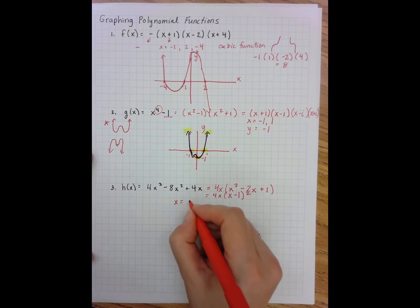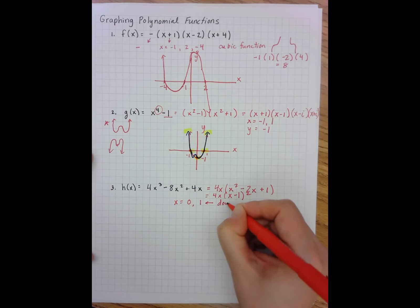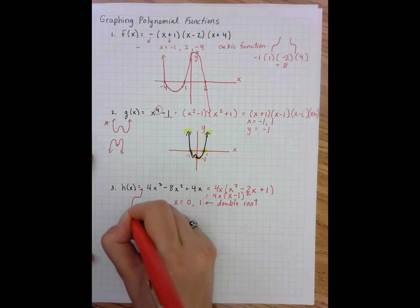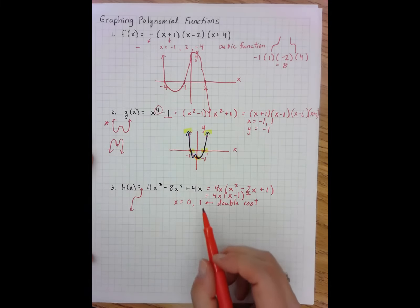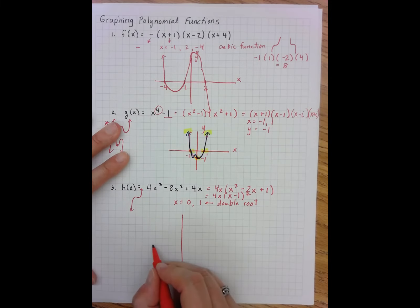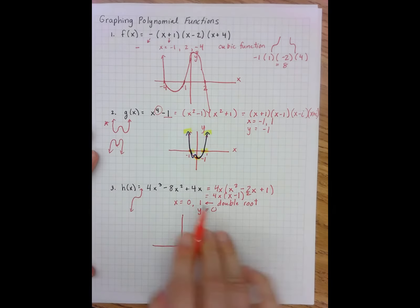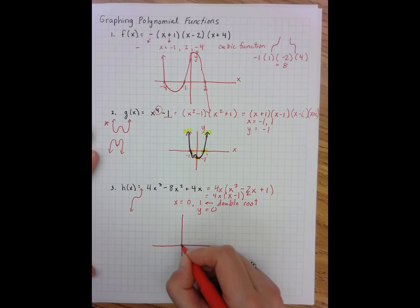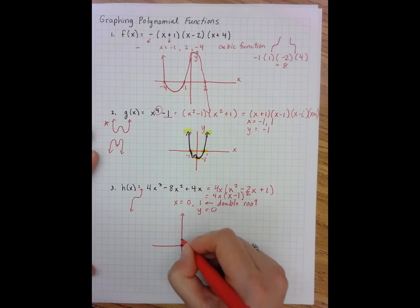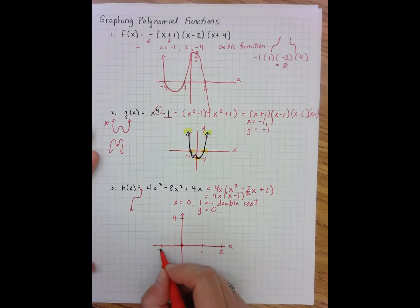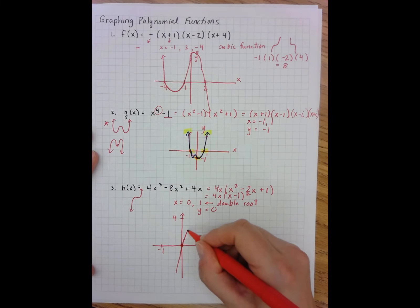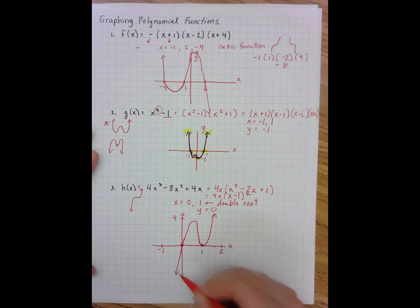I can factor x squared minus two x plus one as x minus one squared. So I now have an x-intercept at zero and a double root at positive one. With a positive leading coefficient and a cubic, I have the general upward shape. Because positive one is a double root, the graph doesn't actually cross the x-axis there — it lightly touches it and bounces back up. My y-intercept is zero because there's no constant in the function.